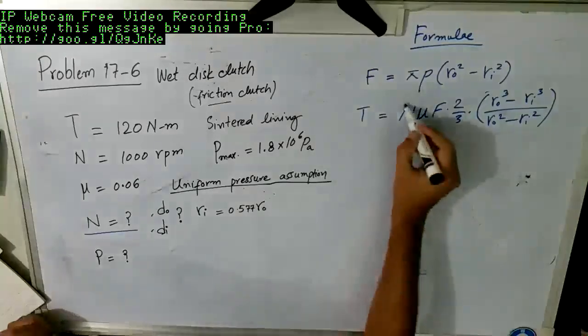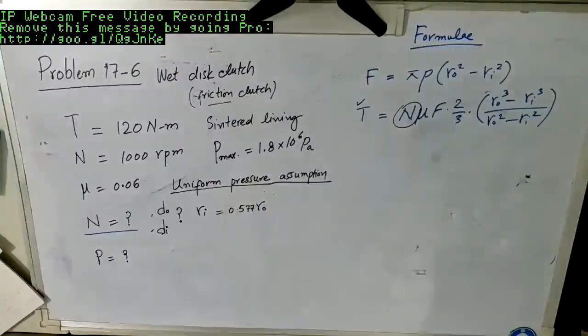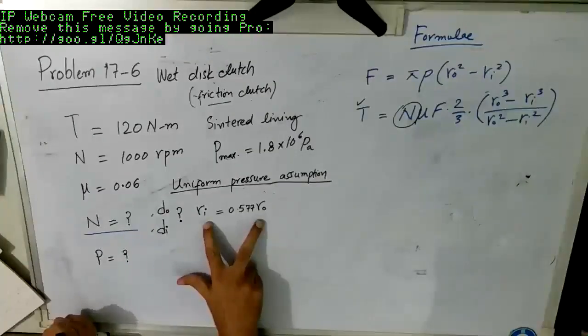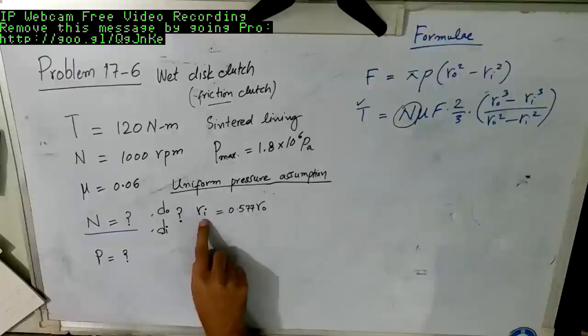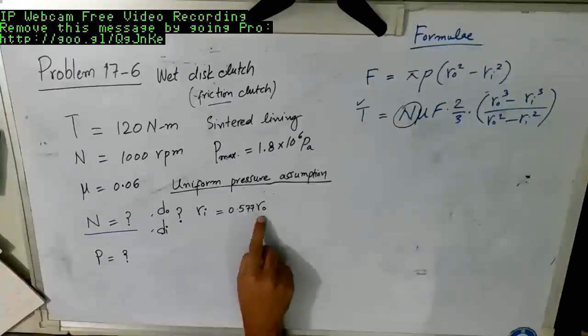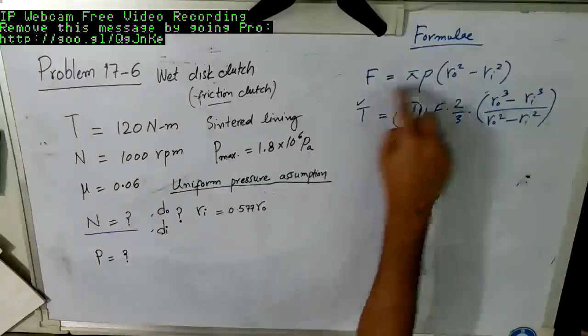And then it was r outer cube minus r inner cube divided by r outer square minus r inner square. So these were the formulas that we have already derived. What we have been asked to find out mainly is actually N, because we are given with T.